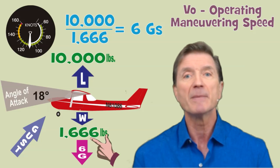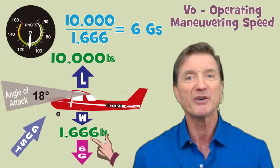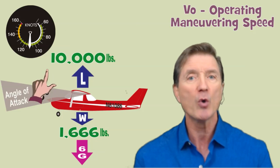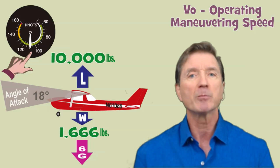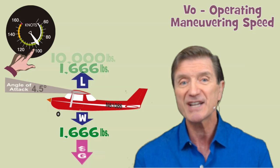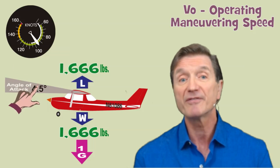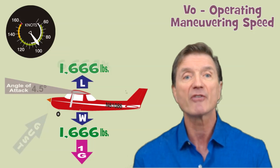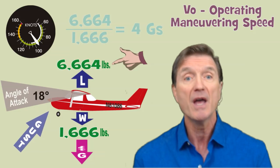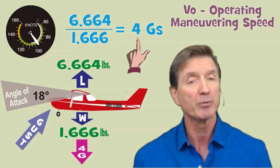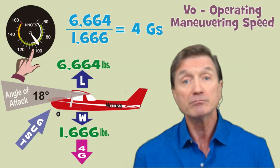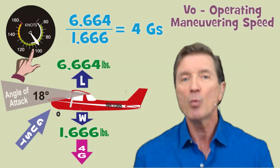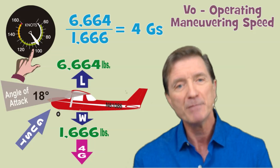We need to do something to keep from exceeding our example limit load factor of 4 g's — 3.8 g's really — in turbulence. The answer is to slow the airplane down. Let's say we slow the airplane down to 95 knots. This allows us to maintain level flight at an angle of attack of 4.5 degrees at 1,666 pounds. At this speed, we can increase the angle of attack four times above its original value before the wings reach their critical angle of attack and the airplane stalls. Therefore, 95 knots becomes our new maneuvering speed if we want to limit ourselves to 4 g's. Thus, decreasing weight requires a decrease in the airplane's maneuvering speed.